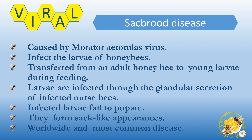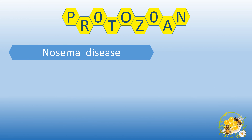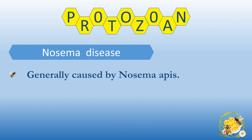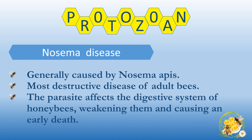Sacbrood is a worldwide and most common disease, so beekeepers should be well aware of it. Protozoan Disease - Nosema Disease: Nosema Disease is generally caused by Nosema apis. This is the most destructive disease of adult bees. The parasite affects the digestive system of the honeybee, weakening them and causing an early death.